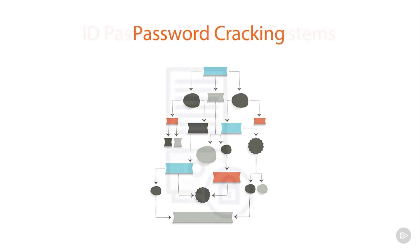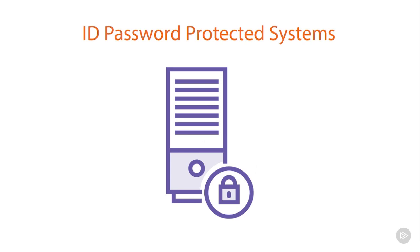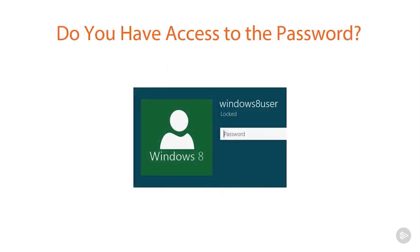The first thing we need to do is identify the systems that are protected by passwords and, of course, which ones are not. We should have seen that through both the scanning and enumeration stage. Now if the system is protected by a password, the next question you ask yourself is: do you have access to the password already through possible vulnerabilities discovered during scanning, or possibly even through Google hacking?